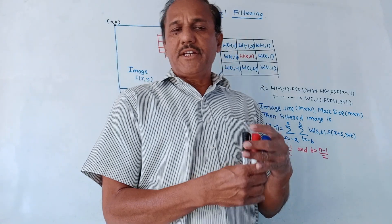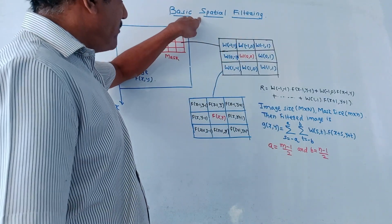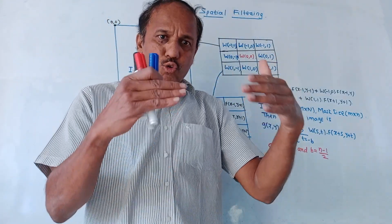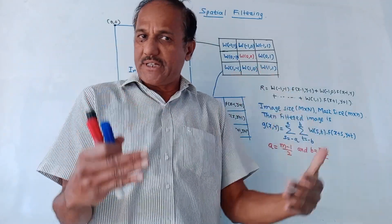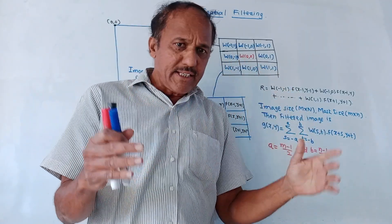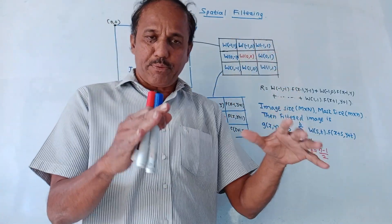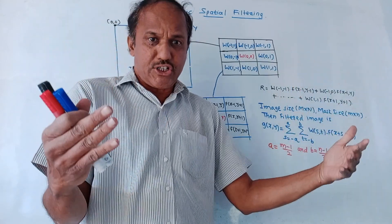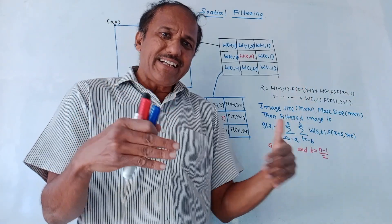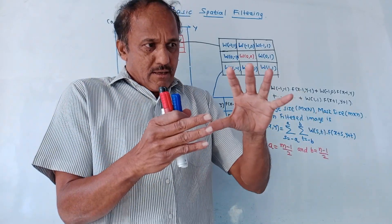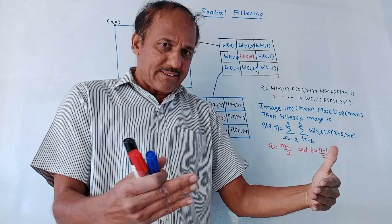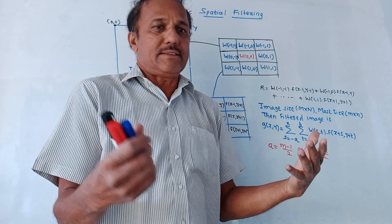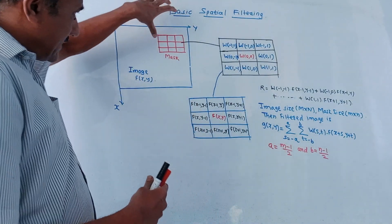Hello and welcome back to this channel. This topic is basic spatial filtering. As the name indicates, we'll discuss how to perform filtering as far as image operations are concerned. Filtering is basically used to avoid noise present in an image, as well as if any image is in a blurred version, we can make that image sharp.